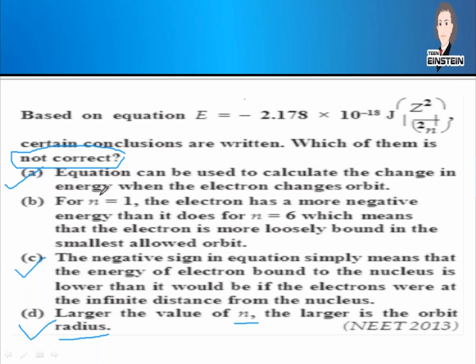Option C states: the negative sign means the energy of an electron bound to the nucleus is lower than it would be if the electron were at infinite distance from the nucleus. This is correct — we discussed this at length. Option B states: for n = 1, the electron has more negative energy than for n = 6, which means the electron is more loosely bound in the smallest allowed orbit. This is incorrect — it should be more tightly bound.